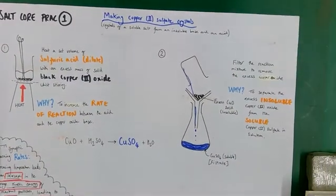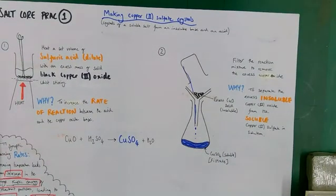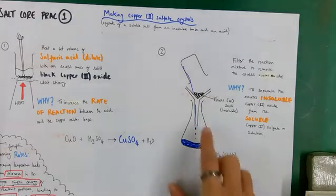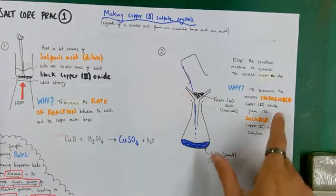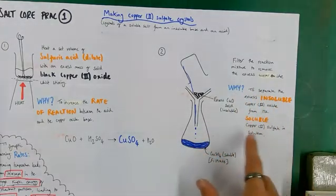Stage two is to filter the reaction mixture to remove the excess copper oxide. Why filter? We want to separate the excess insoluble copper oxide from the soluble copper sulfate in solution.